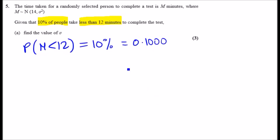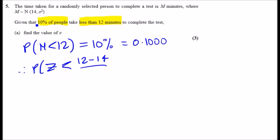First, convert to the standard normal. We can write P(Z < (12 − 14)/σ) = 0.100. The problem with the table is that it only records values from 0.5 onwards, so we need to handle this left-tail probability carefully.